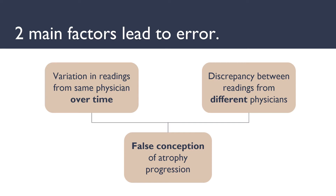There are two main factors that largely constitute the error of monitoring muscle atrophy over time with ultrasound. The first being variations in readings from the same physician over time, and the second being discrepancy between readings from different physicians. Both contribute to a false sense of atrophy progressions, which poses serious consequences, such as increased costs to hospitals and the patient, further health complications if wrongly treated, as well as potentially life-threatening outcomes if undiagnosed or incorrectly diagnosed.